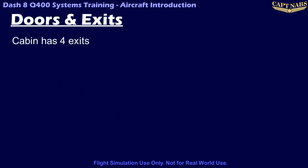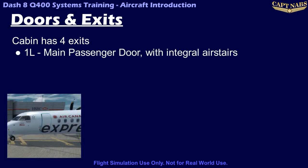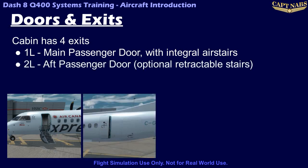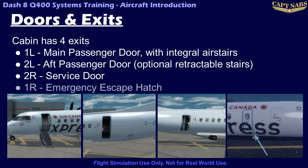The cabin of the Q400 has four exits. The various doors are labeled using a number-letter combination — for example, 1L indicates the front left door, and 2R indicates the rear right door. The 1L door is the main passenger entrance and has integral air stairs. The 2L door is the aft passenger door used by some airlines for loading, with optional retractable stairs available. The 2R door is a service door used primarily for loading catering.